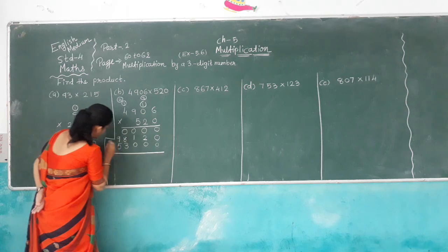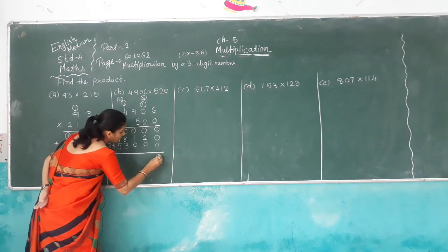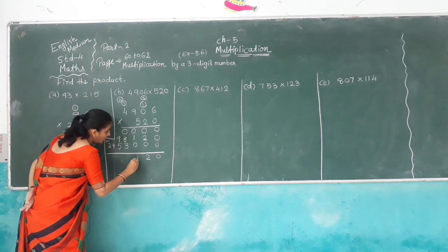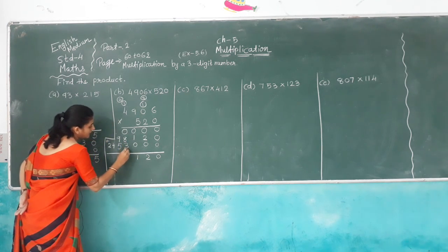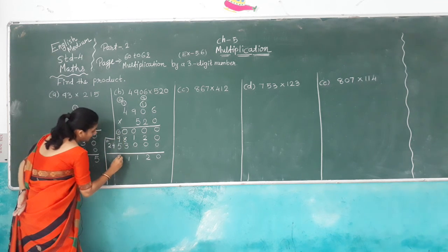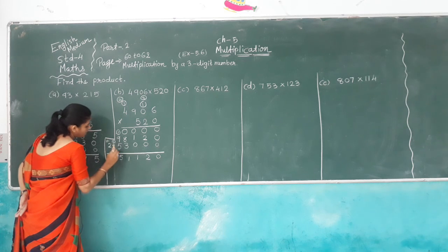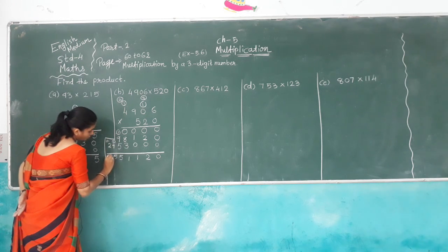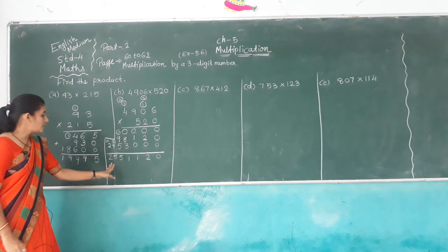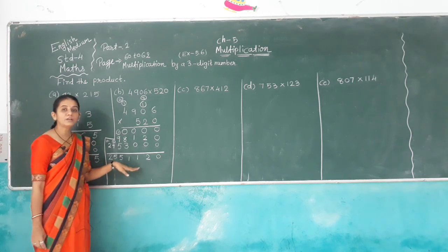Now add all numbers: 0 plus 0 plus 0 plus 0 plus 0 is 0, 0 plus 2 is 2, 0 plus 1 is 1. Then 8, 9, 10, 11 — carry 1. 9 plus 1 is 10, plus 5 is 15 — carry 1. 4 plus 1 is 5, and 2. So we get answer 25,551,120.